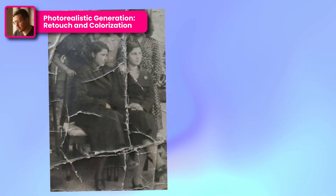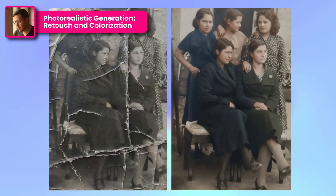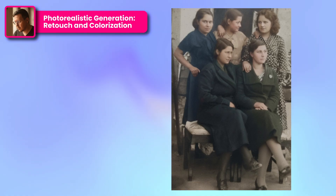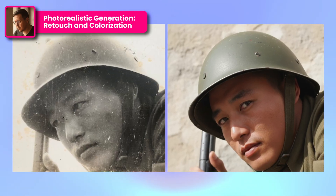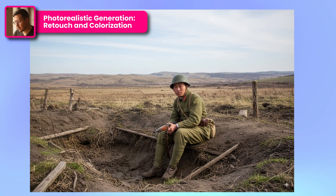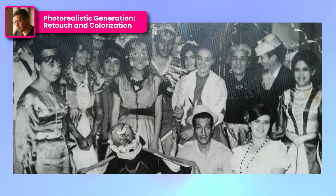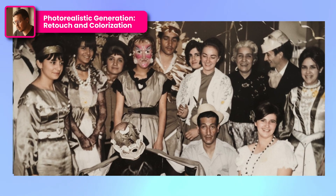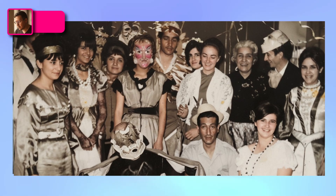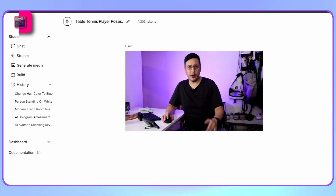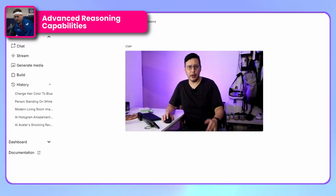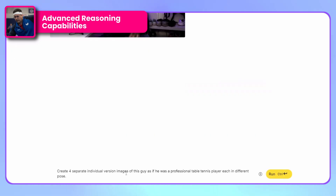Nano Banana generates images with absolutely incredible photorealism. A fascinating application is in restoration and colorization of historical images. It demonstrates exceptional capabilities for restoring old photographs and applying realistic colorization. Its contextual understanding allows it to identify specific elements from the era and apply historically accurate colors, converting black and white images into full color versions with notable authenticity.